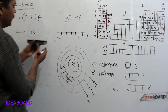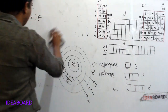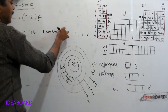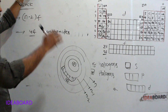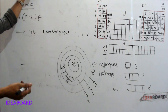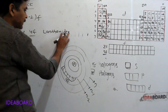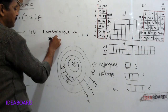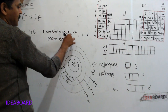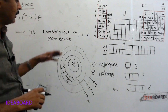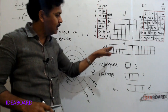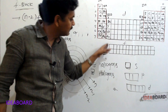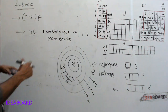The 4f series elements are called lanthanides or lanthanons, also known as rare earths because their availability in the earth's crust is very low.